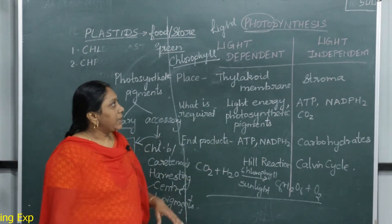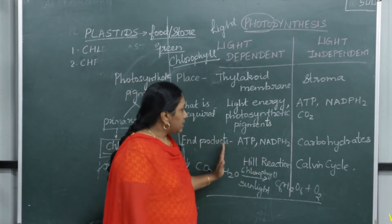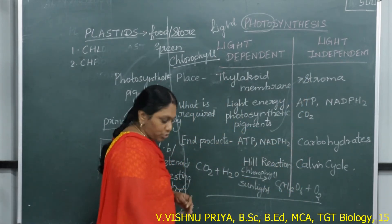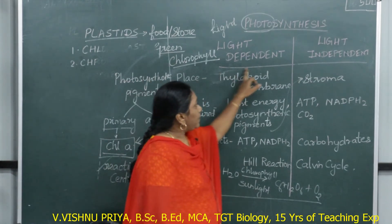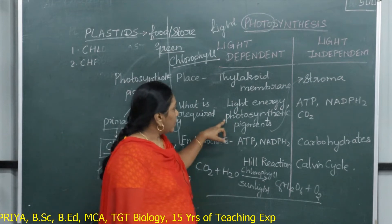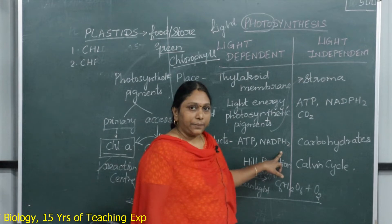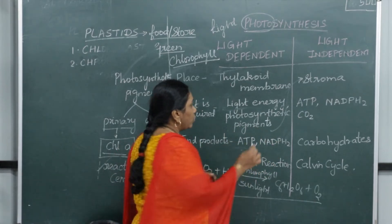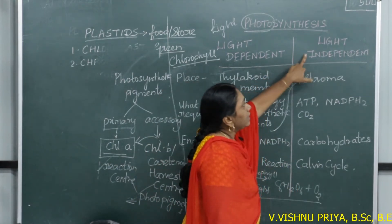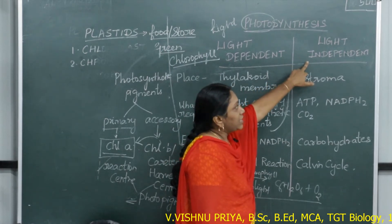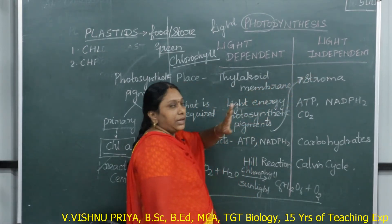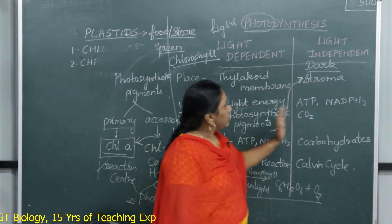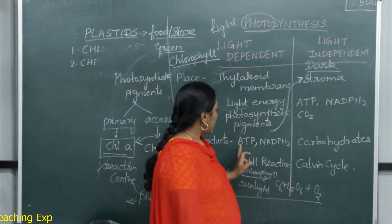The light-dependent reaction takes place in the thylakoid membrane where chlorophyll is present, because chlorophyll is essential for trapping light energy. After the synthesis of ATP and NADPH₂, both products move into the stroma of the chloroplast where the light-independent reaction takes place. The light-independent reaction — as the name indicates — does not require light, and is also called the dark reaction. It takes place after the light reaction is completed.